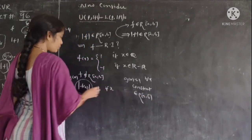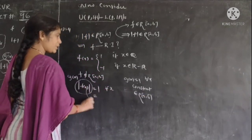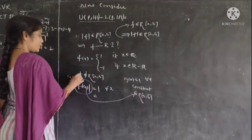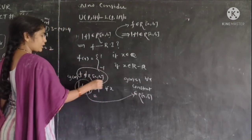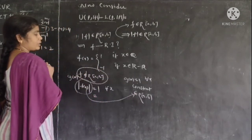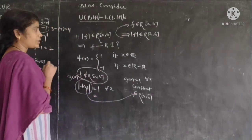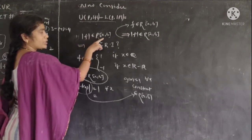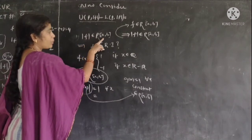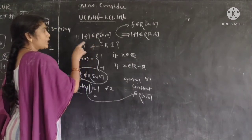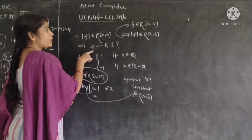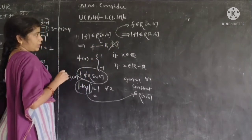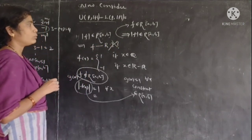Since g(x) = 1 is a constant function, it is a Riemann integrable function. So mod F is a Riemann integrable function, but the original function F is not a Riemann integrable function. This shows the converse is not true. Thank you.